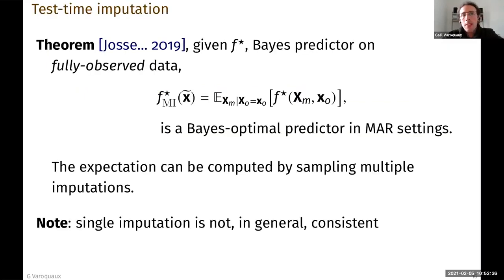The first thing that we can do is that we can use imputation and we can impute the test. So suppose that we're given F-star, which is the Bayes predictor on fully observed data. I'm not telling you how we got it. Maybe we had enough data in a training set that was fully observed, but we're just given this Bayes predictor on the fully observed data.